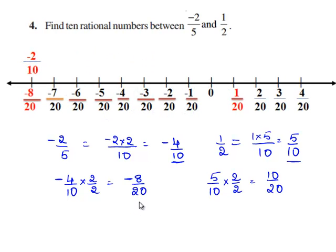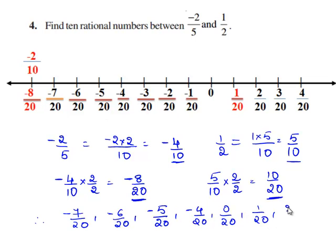Now, we shall write 10 rational numbers between minus 8 by 20 and 10 by 20. They are minus 7 by 20, minus 6 by 20, minus 5 by 20, minus 4 by 20, 0 by 20, 1 by 20, 2 by 20, 3 by 20, 4 by 20, and 5 by 20.